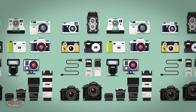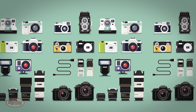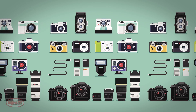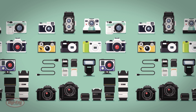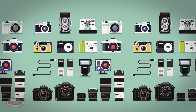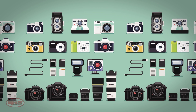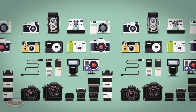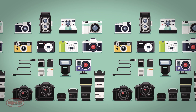Cameras come in a variety of flavors. A few examples include the compact digital camera, the DSLR or digital SLR camera, action cameras, and more recently, the 360-degree camera.